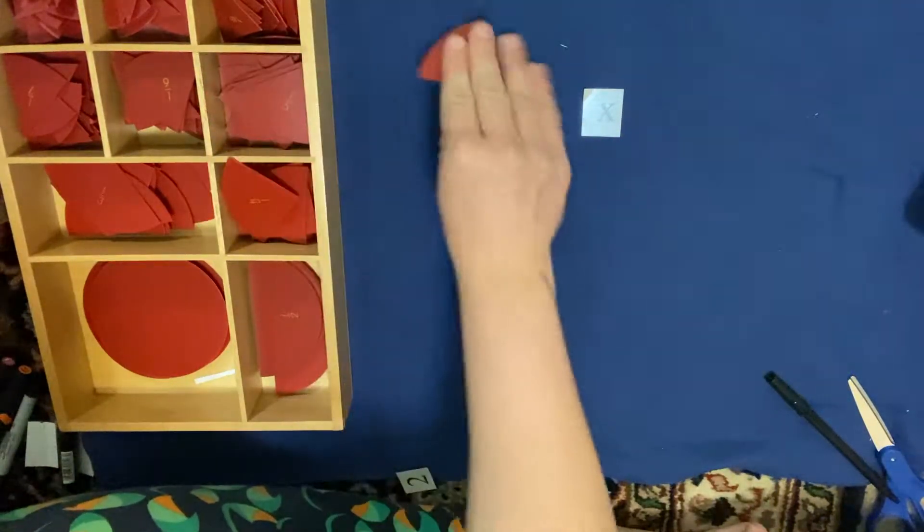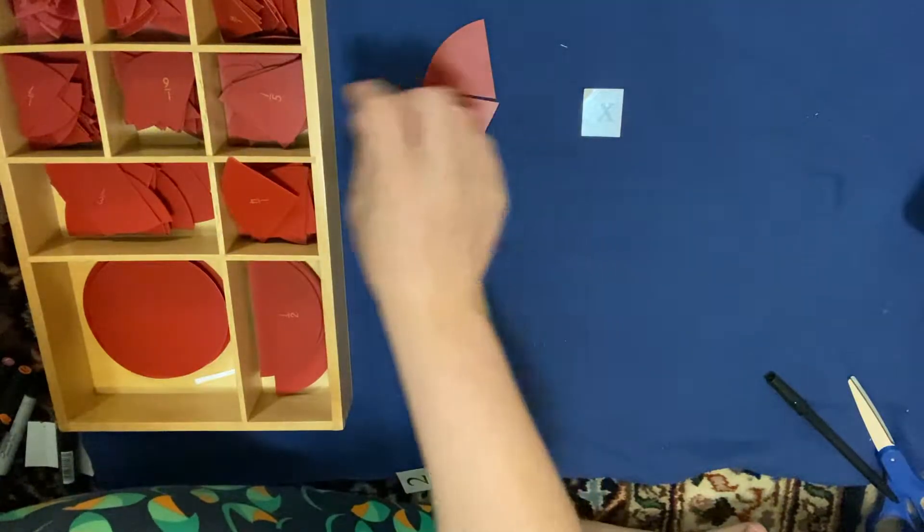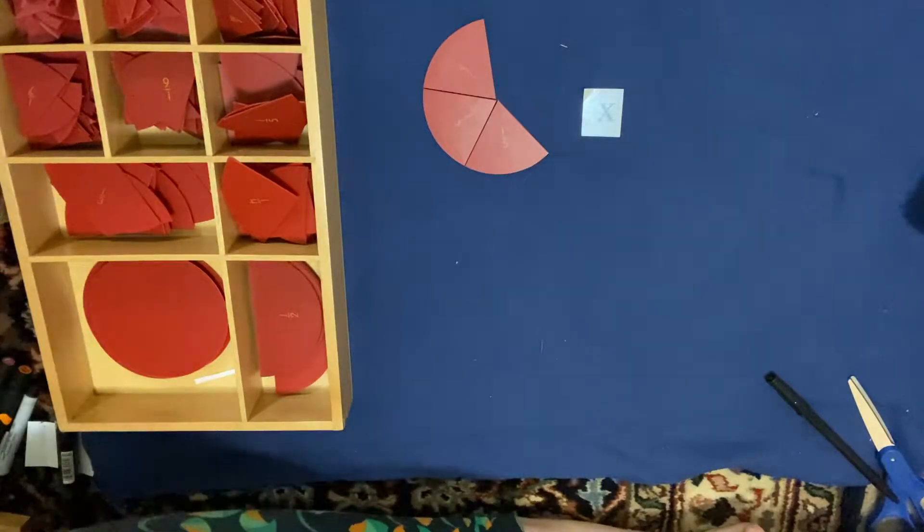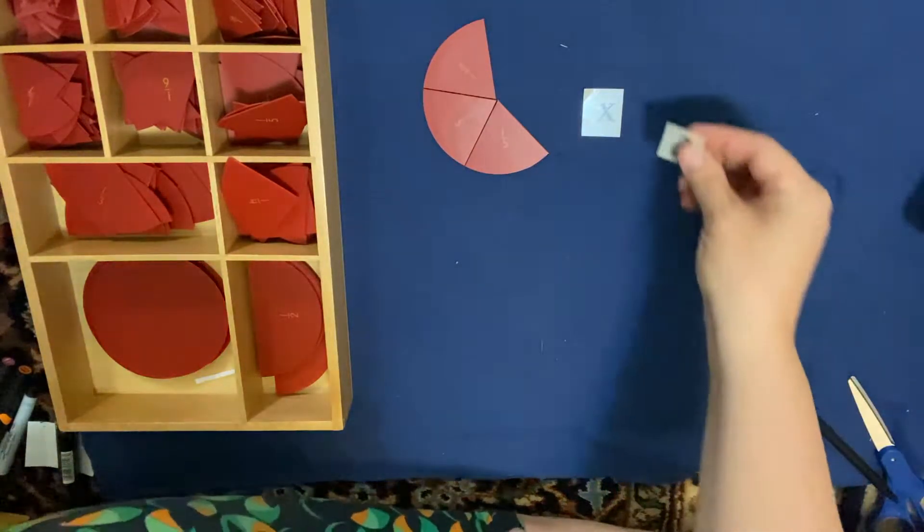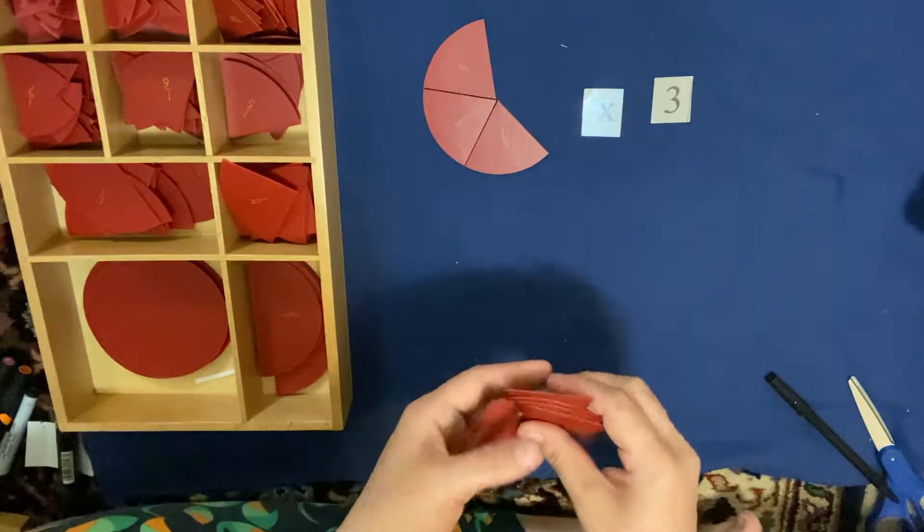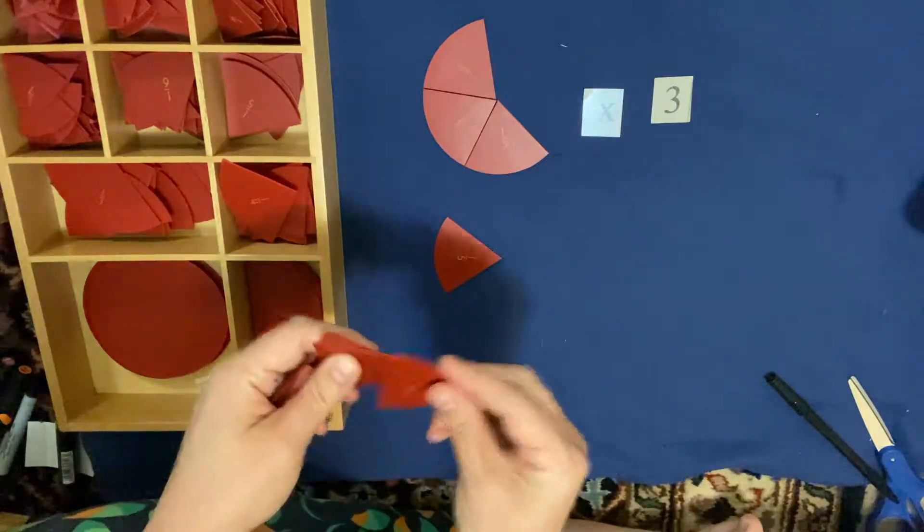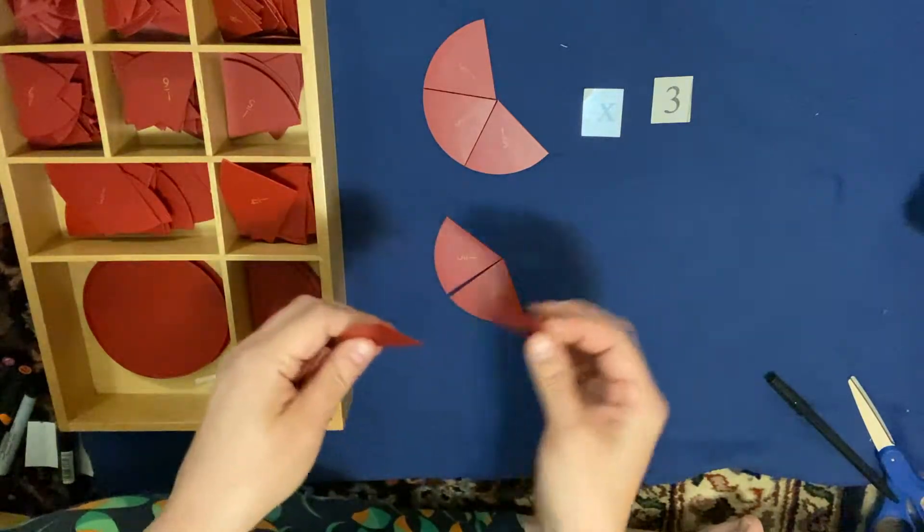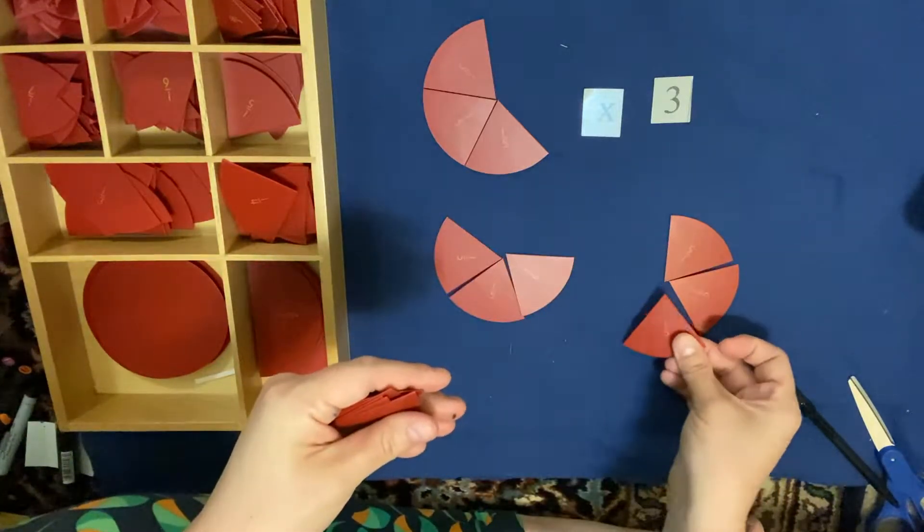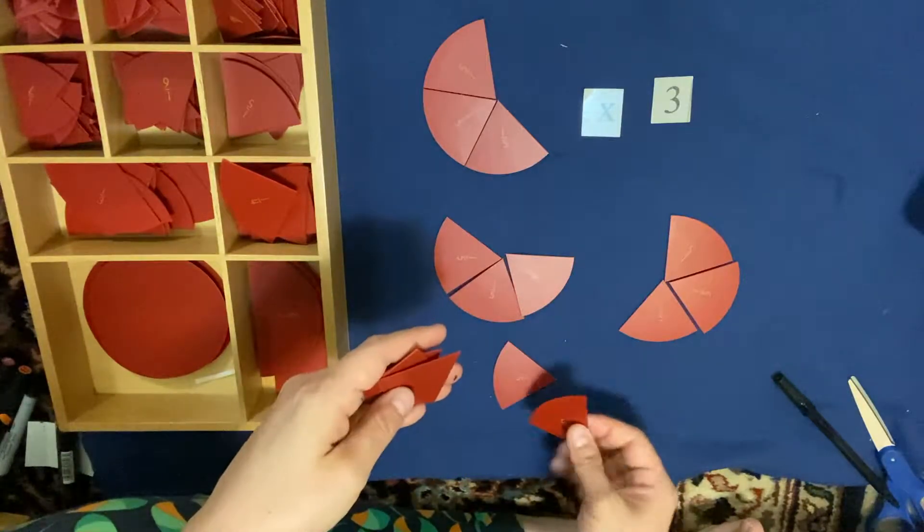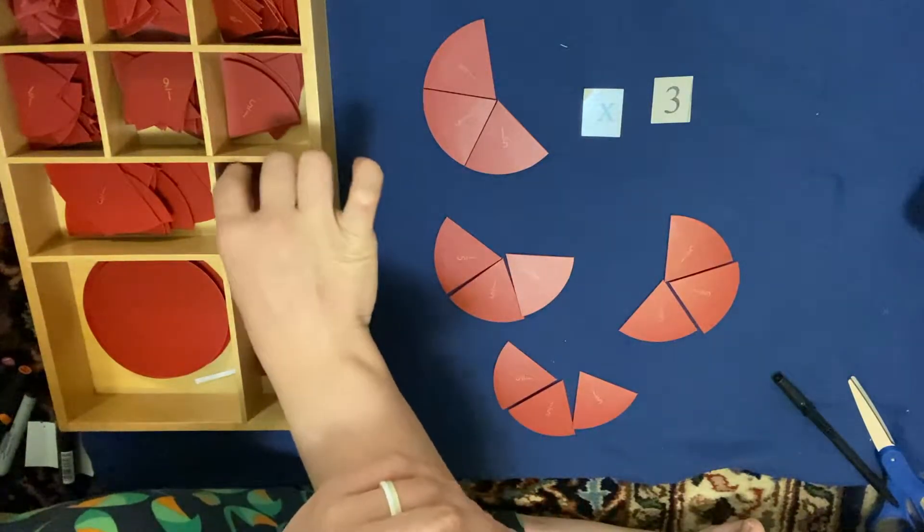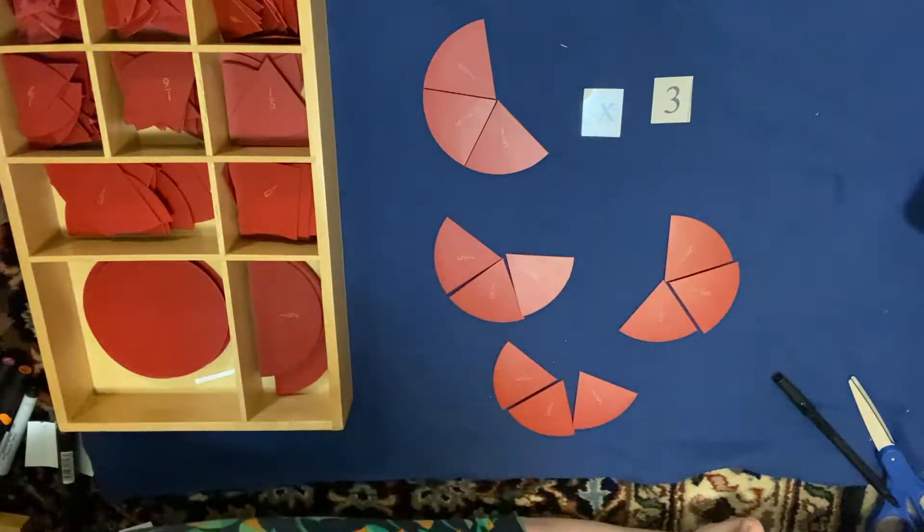Let's do another one. How about 3/5 times 3. So I'm going to take out a whole handful here of fifths. So I need 3/5 three times. So here it is 1 time, 2 times, and 3 times. And to find my answer, I'm going to count how many I have.